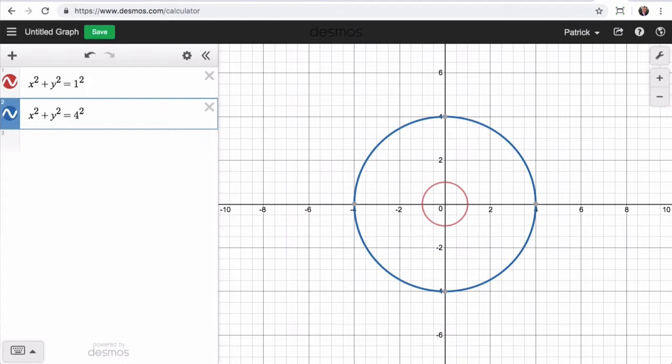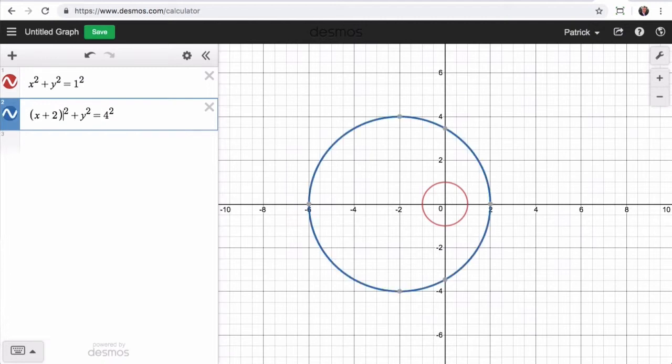Now what if we want to move that circle to the left? So that involves the x-axis. So on the x-axis, if I want to move it 2 units to the left, what I need to do is to add 2 to the value of x. So I'll start with a bracket, I add 2, and then close my bracket.